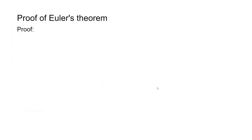Now let's look at a brief proof of Euler's theorem. The idea is to construct a set S containing φ(n) elements that are coprime to n. Then, similar to how we prove Fermat's little theorem, we multiply each element by an arbitrary integer a. We want to show that these two sets are equivalent after taking modulo n — that is, they are just a permutation of one another. Then we multiply all elements in both sets, which gives us the congruence modulo n that we're looking for.